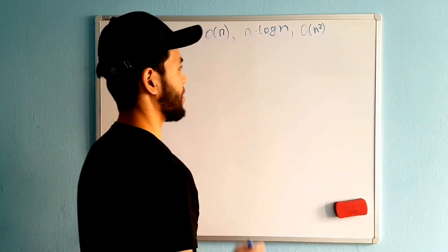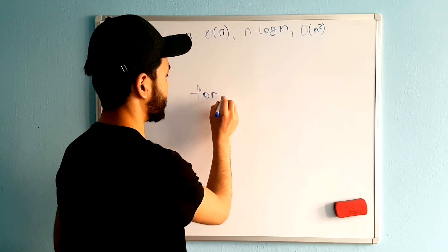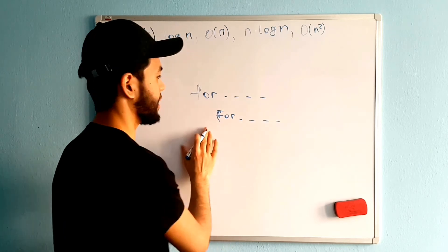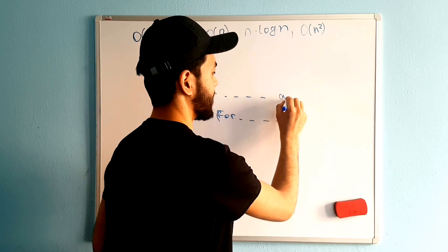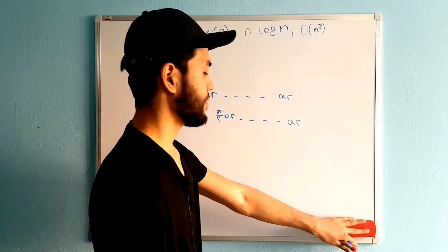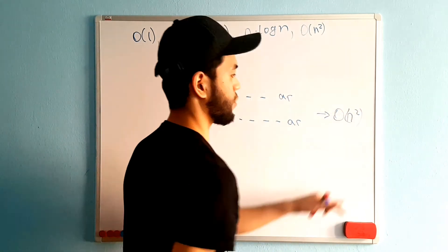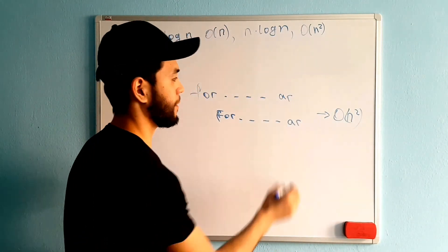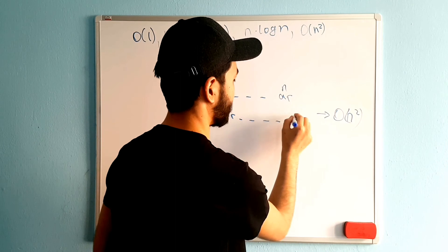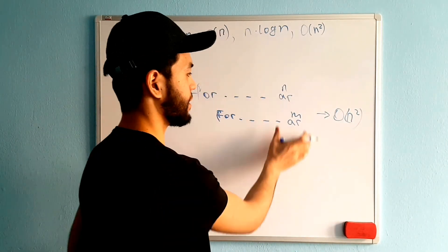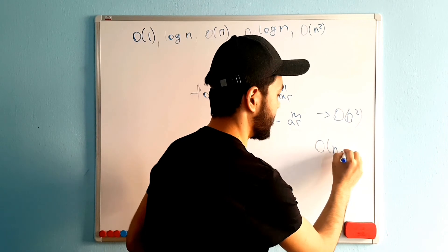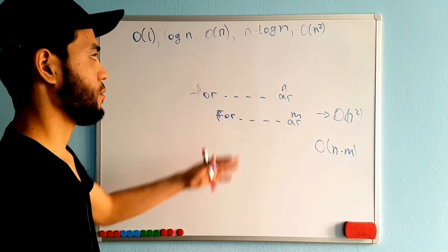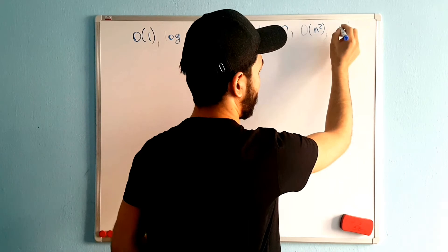Next is O(n²), quadratic time complexity. An example is a nested loop: one outer for-loop and another loop inside. You are iterating one array in the outer loop and another array in the inner loop, making the time complexity O(n²). However, if the two arrays have different lengths — say n and m — then the time complexity becomes O(n × m). Nested loops lead to quadratic or multiplicative time complexity.